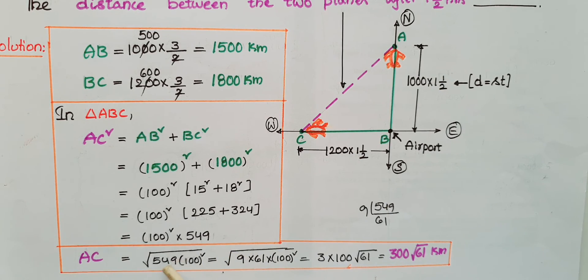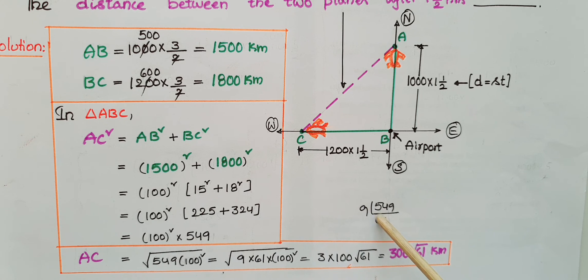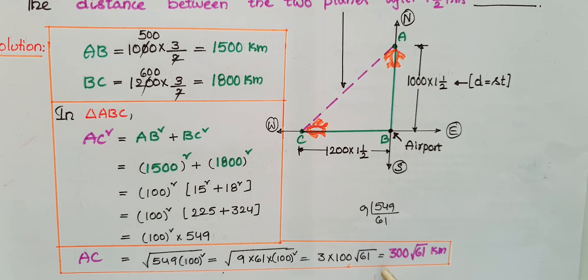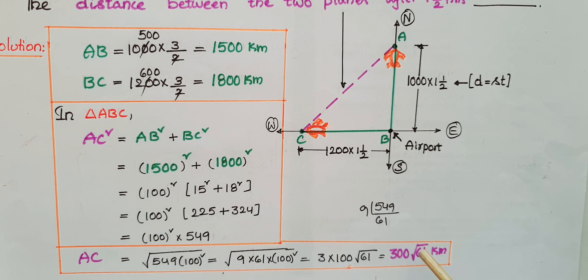Prime factorizing 549 gives 9 × 61. So AC = √(9 × 61 × 100²) = 3 × 100 × √61. Since 61 is not a perfect square, AC = 300√61 km. The distance between the two planes after one and a half hours is 300√61 kilometres.